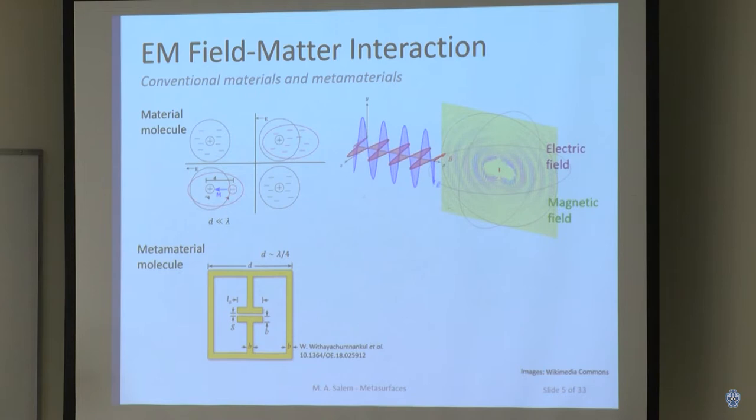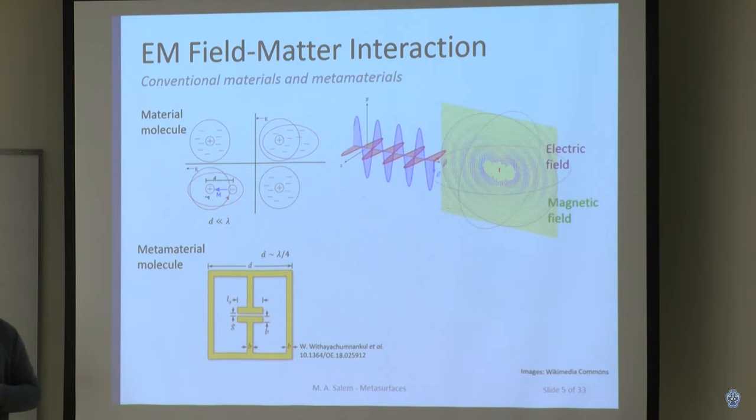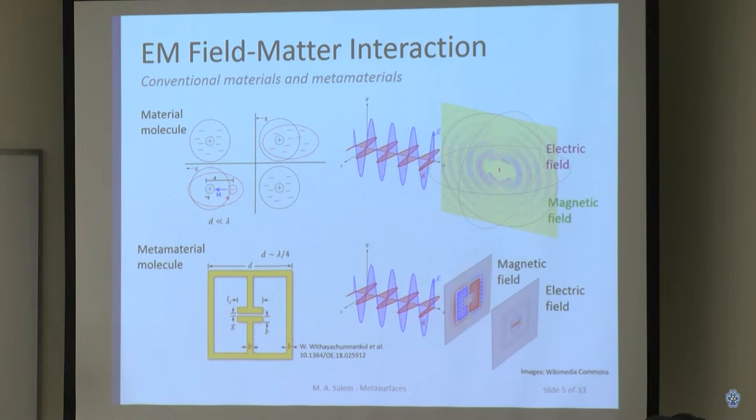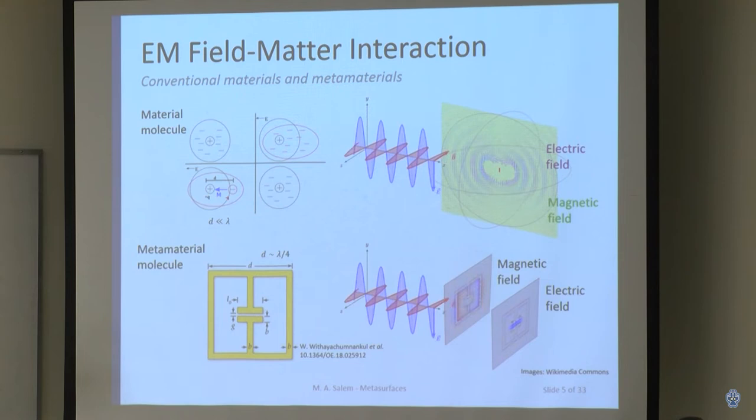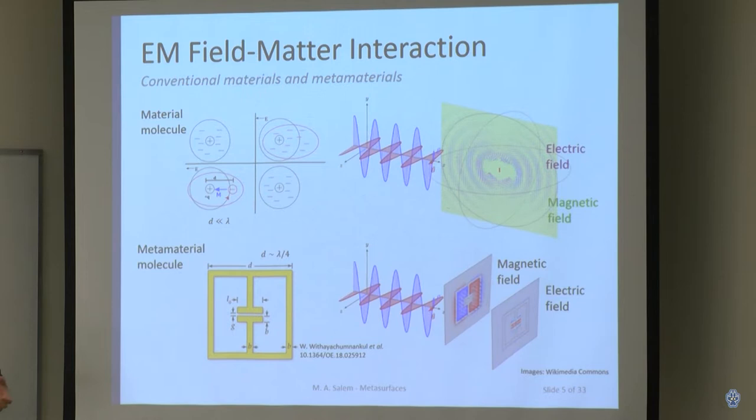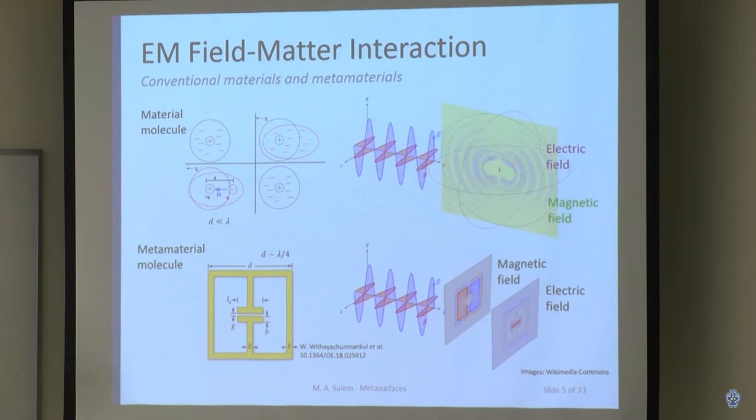Metamaterials are artificial molecules where we can control the behavior of charges as the electric and magnetic field interact with them. By creating a metallic artificial molecule, we force the charges to move in certain patterns and accordingly create electric and magnetic fields that are not naturally created by regular molecules.